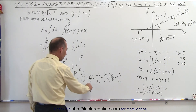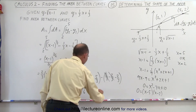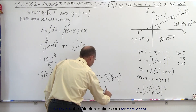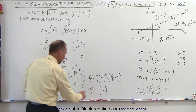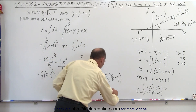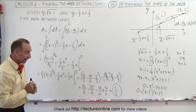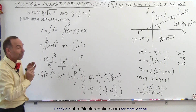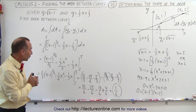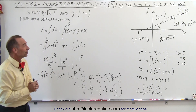Writing everything over sixths: 32 over 6, minus 25 over 6, minus 10 over 6. The lower limit terms: two-thirds cancels, and the negatives combine to give plus 4 over 6. So 32 plus 4 equals 36, minus 35 equals 1. The total area between the two curves is exactly one-sixth. The positive result confirms we likely did it correctly — a negative area would signal an error.